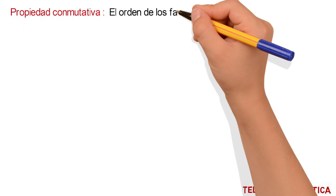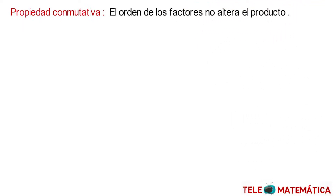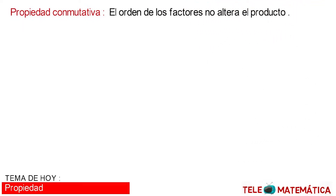To start with the video, we will introduce the properties of multiplication. In first place, we have the commutative property, which is defined as: the order of the factors does not alter the product. Algebraically, we would have A multiplied by B is equal to B multiplied by A.